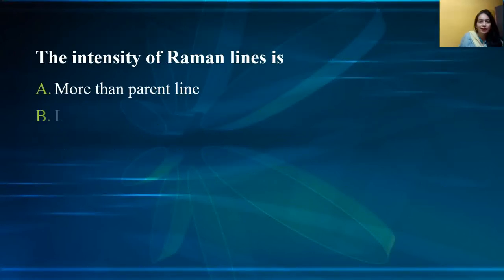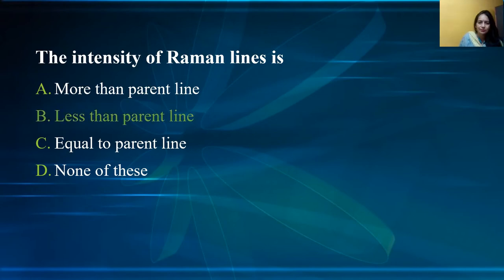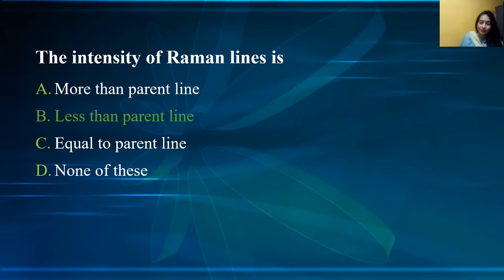The intensity of a Raman line is — more than the parent line, less than the parent line, equal to the parent line, or none. In the Raman spectrum, the intensity of Raman lines is less than the parent line. Also, anti-Stoke lines are very weak, but as temperature increases, the intensity of anti-Stoke lines increases.